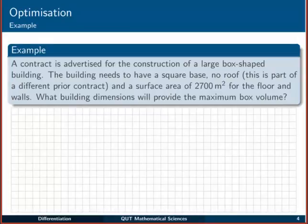Let's try to apply that on this example. We're told that a contract is advertised for the construction of a large box-shaped building. The building needs to have a square base, it's got no roof. Apparently that's part of a different prior contract, so we're not going to worry about it. But it does have a surface area of 2700 square meters for the floor and the walls. The question says, what building dimensions will provide the maximum box volume? I've run through that pretty quickly, so maybe pause the video and read it yourself and see if you can make sense of it.